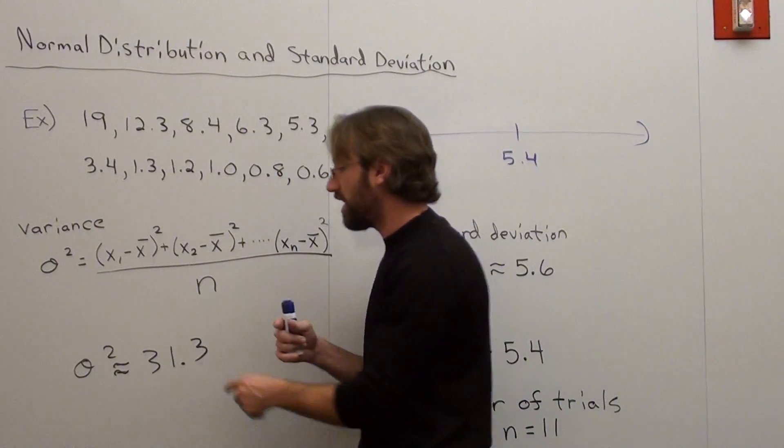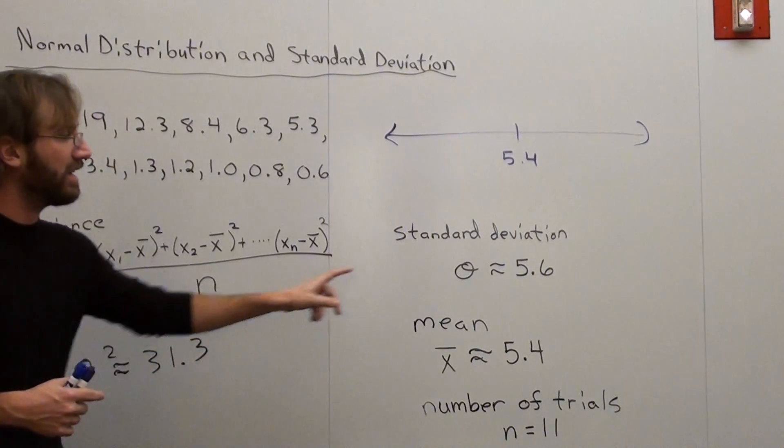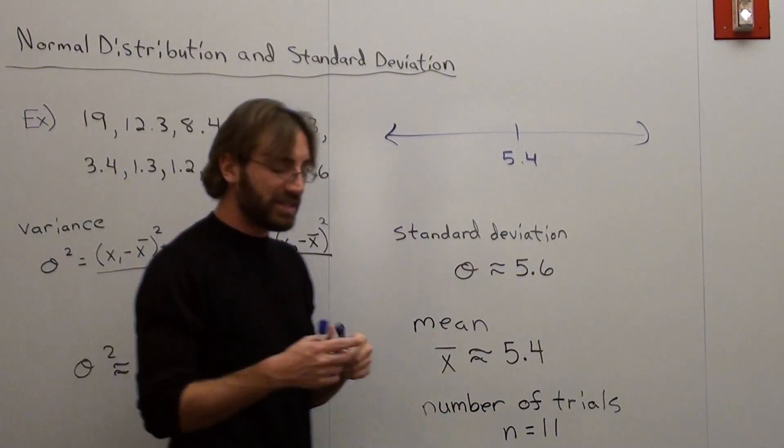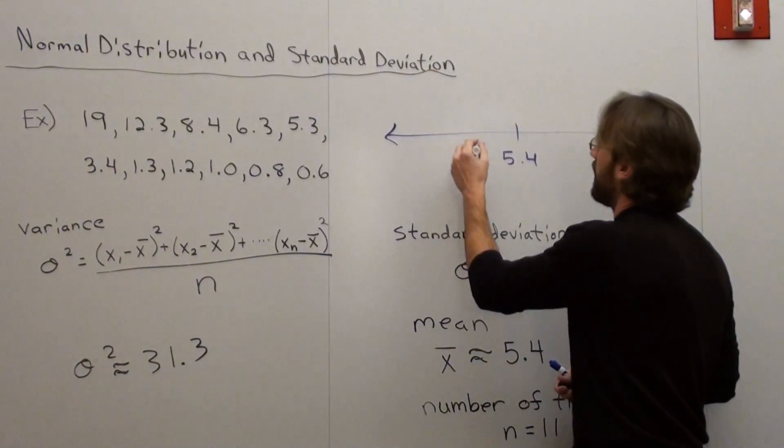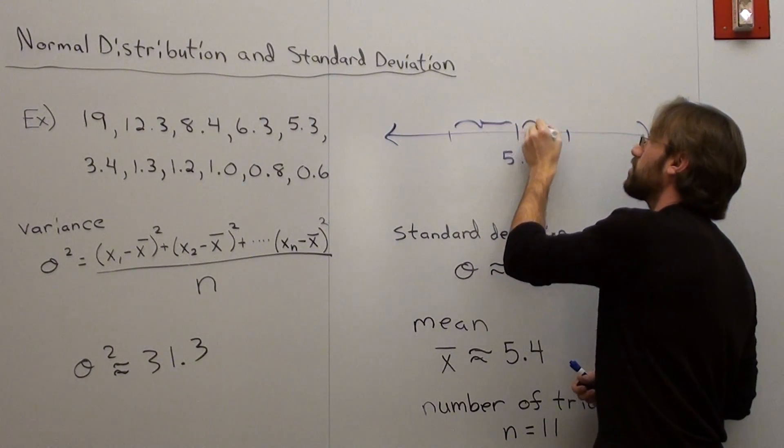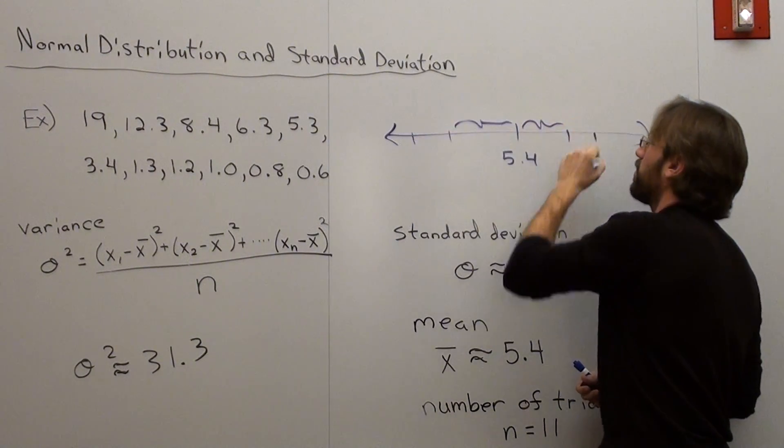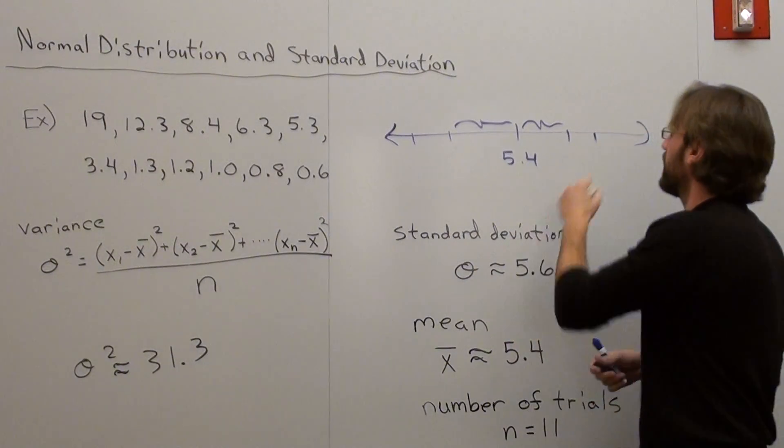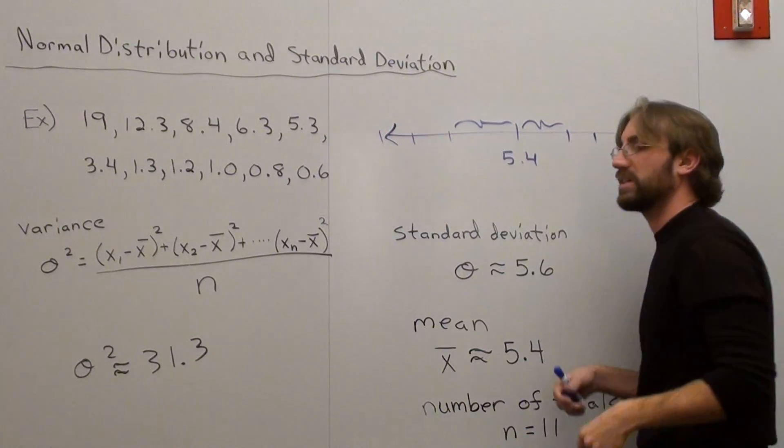In order to figure out standard deviation, I take the square root of each side, and it's 5.6. So basically what that means is, if I subtract 5.6, I'm one standard deviation away on both sides. 5.6 again, two standard deviations, 5.6, et cetera.